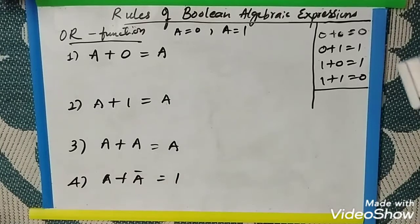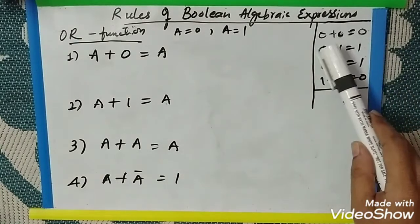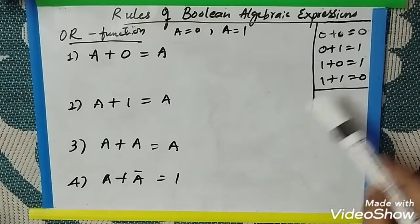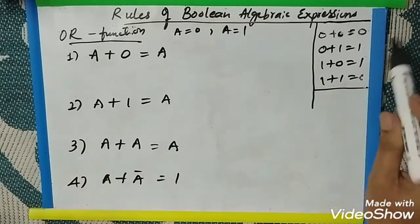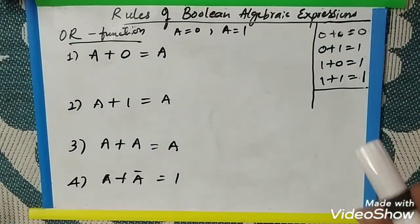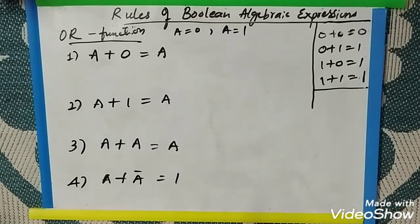We know already the rules for OR is 0 plus 0 is 0, 0 plus 1 is 1, 1 plus 0 is 1, and 1 plus 1 is 1. So it is not plus but it is OR. OR means you have a choice. If anyone is 1, then the answer is 1. If both are 1, then also it is 1. This is what OR function.